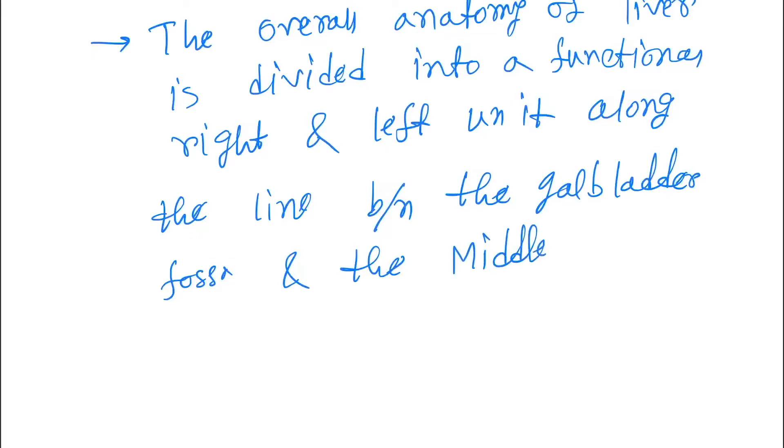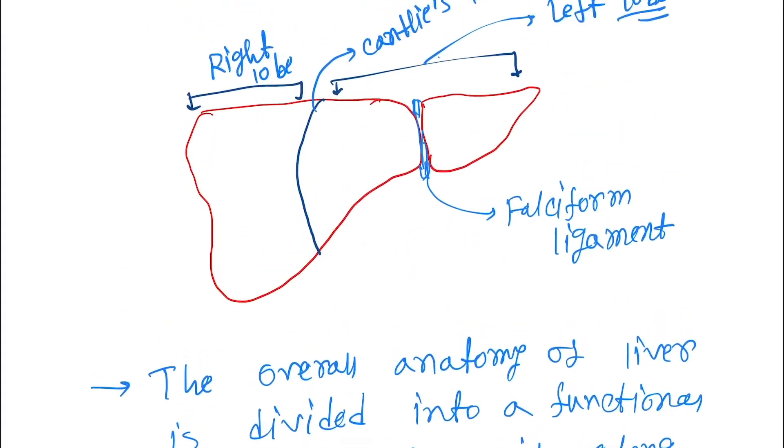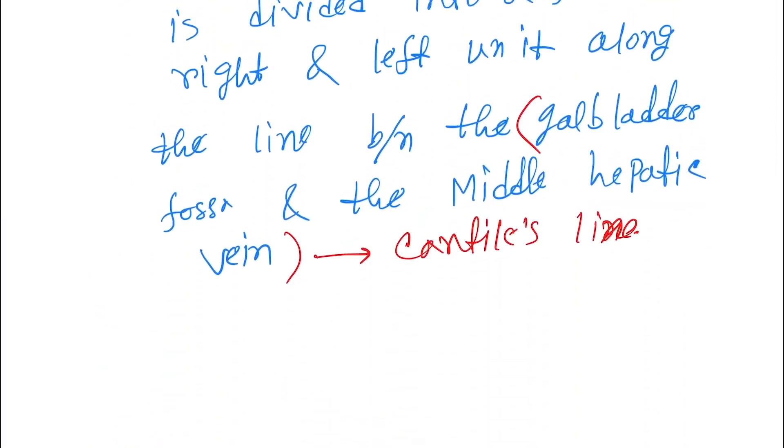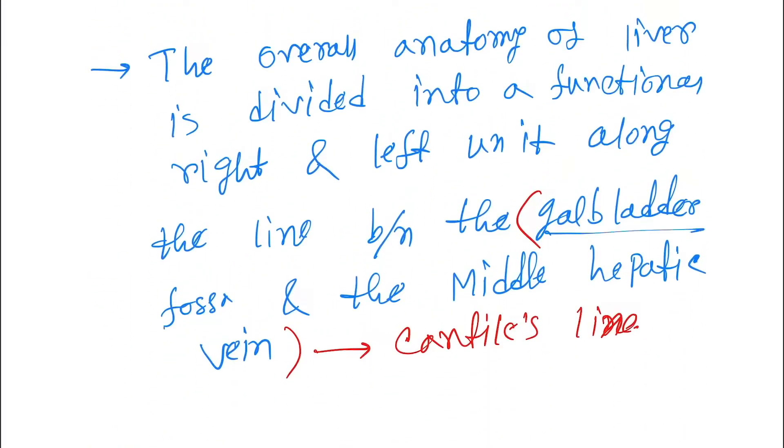This is called the Cantlie's line. In the next diagram I will draw it with the gallbladder fossa and the middle hepatic vein.